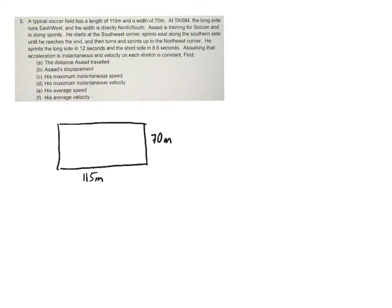All right, so now we've got, it says Asad is training for soccer and is doing sprints. He starts at the southwest corner, so that would be down here, and sprints along the southern side until he reaches the end. He turns and sprints up to the northeast corner.